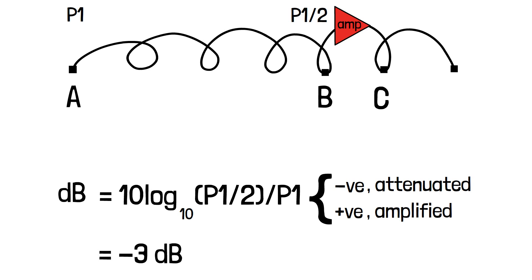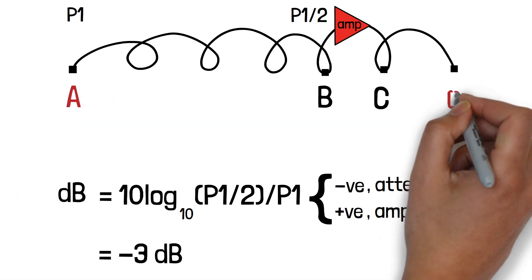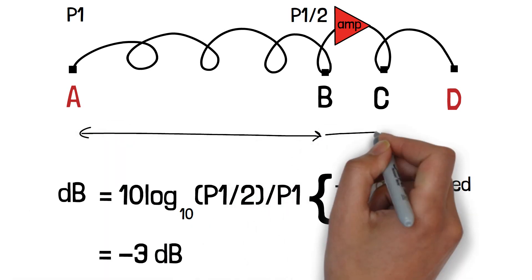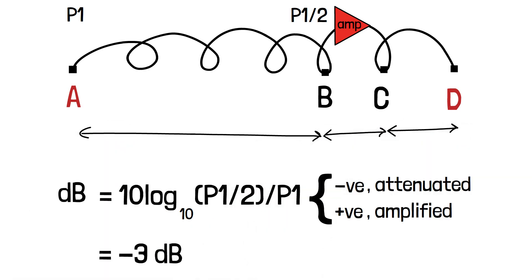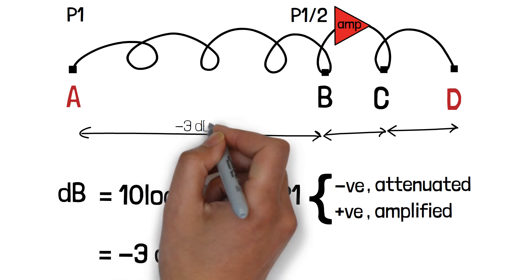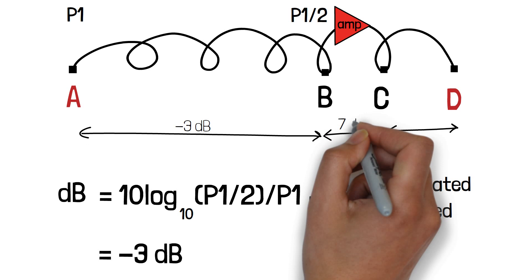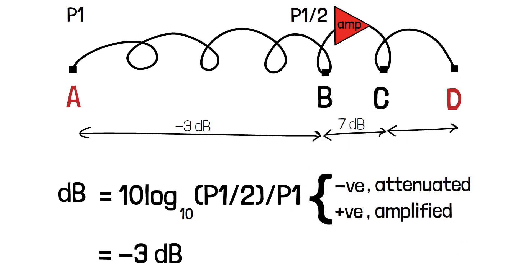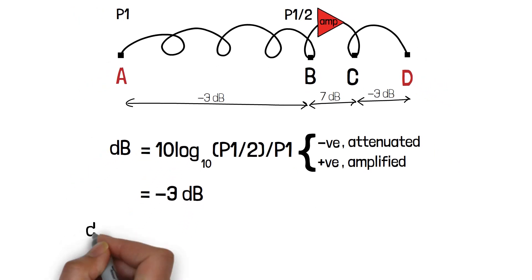We can also add the decibel numbers. Therefore, one can calculate the decibel value between two points by adding the decibel values at several points. To understand this, let us take the transmission medium where the signal is first attenuated by 3 decibel, then amplified by 7 decibel, finally it is attenuated by 3 decibel. One can find the resultant decibel value for the signal between points A and D by adding the decibel values between each set of intermediate points. It comes out to be 1 decibel.